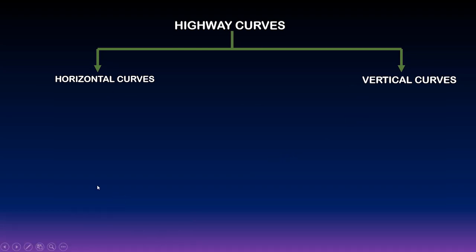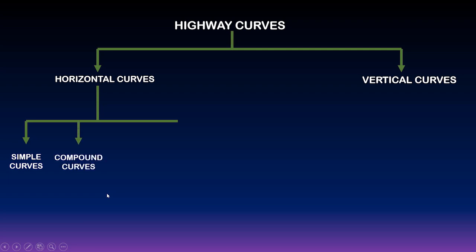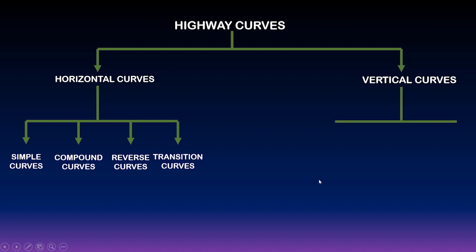In horizontal curves, you basically have simple curves, compound curves, reverse curves, and transition curves. For vertical curves, you know the idea of symmetric parabolic and unsymmetric parabolic curves.